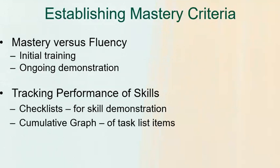So let's talk about how do we establish mastery criteria. First of all, we want to think about mastery versus fluency. Mastery generally is going to be that they can perform the skill at least within these teaching settings in this specific time window. Fluency is going to be more about how quickly they're able to perform the skill, how much it's going to generalize, how long it's going to maintain over time, those types of variables.